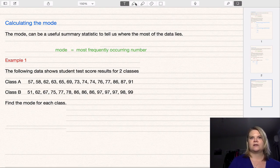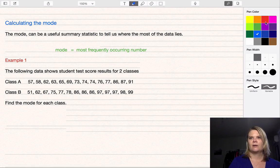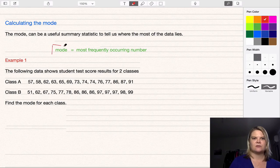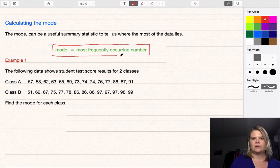The mode of the data—let's put a box around this special rule—is the most frequently occurring number in the data set.